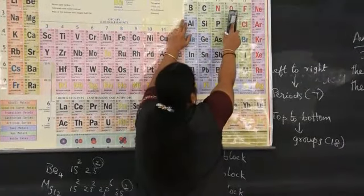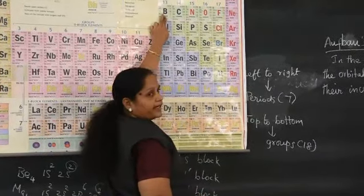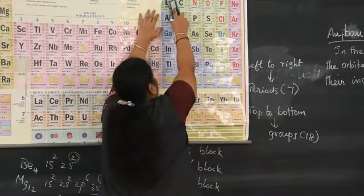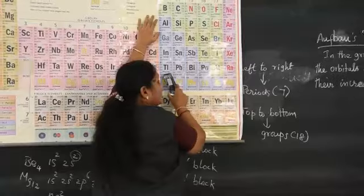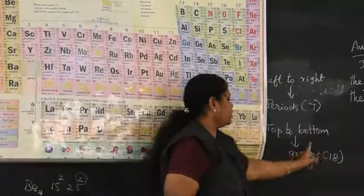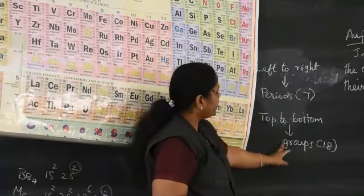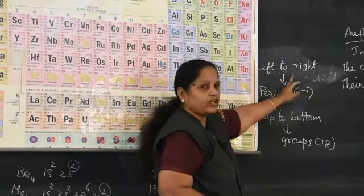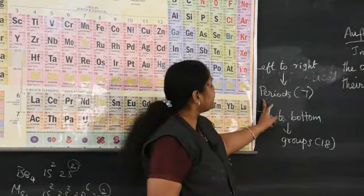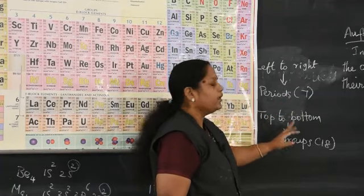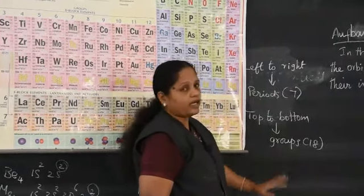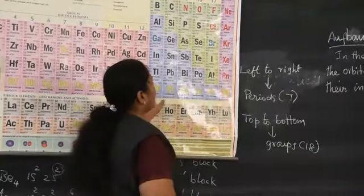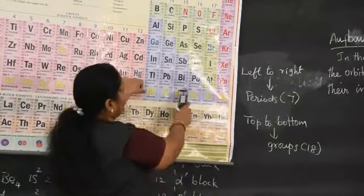In P block, elements such as boron, carbon, and oxygen are non-metals. At the top of a group, non-metallic character increases. When we move from top to bottom, down the vertical column (group), metallic character increases. Horizontal rows are called periods; vertical columns are called groups.